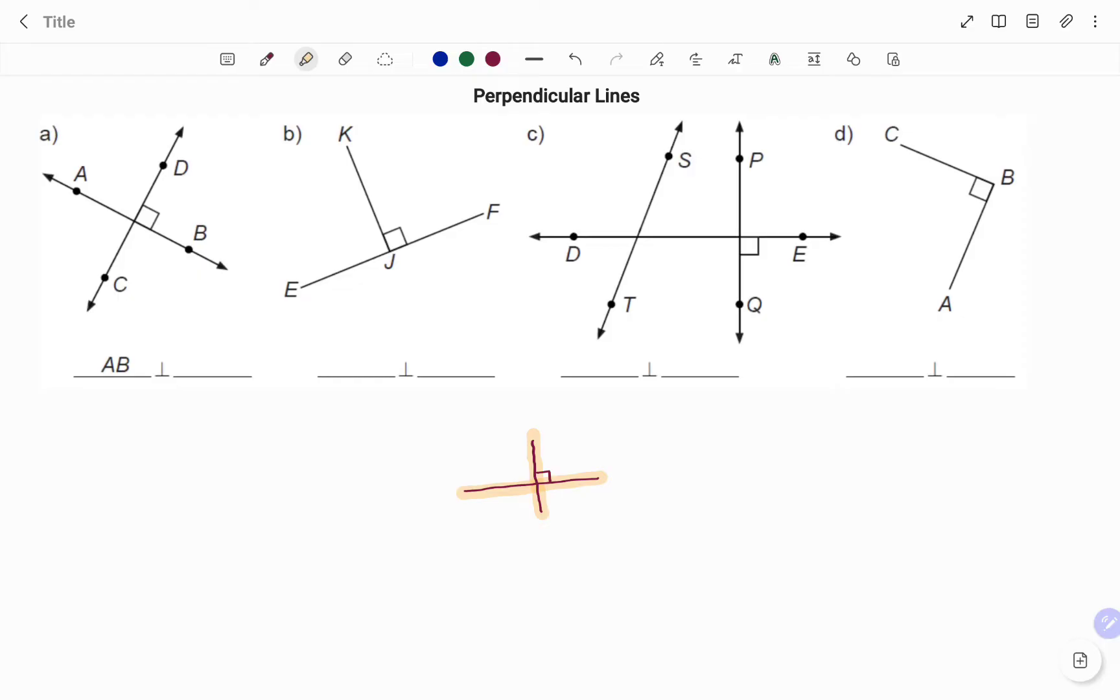If you look at the first example, we have two lines intersecting: line AB and line CD. I'm going to highlight all the lines that intersect at 90 degrees. Note that they form an angle of 90 degrees. Therefore, as shown in the first example, line AB is perpendicular to line CD. The symbol for perpendicular to show that two lines are perpendicular is shown here.